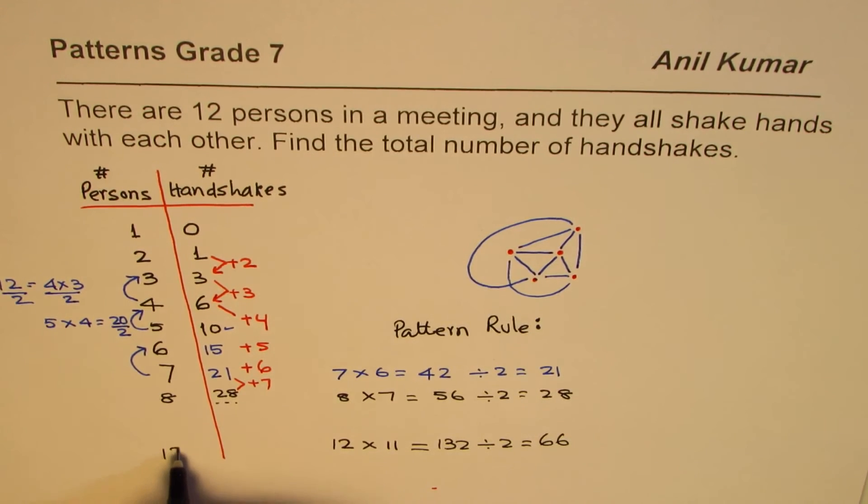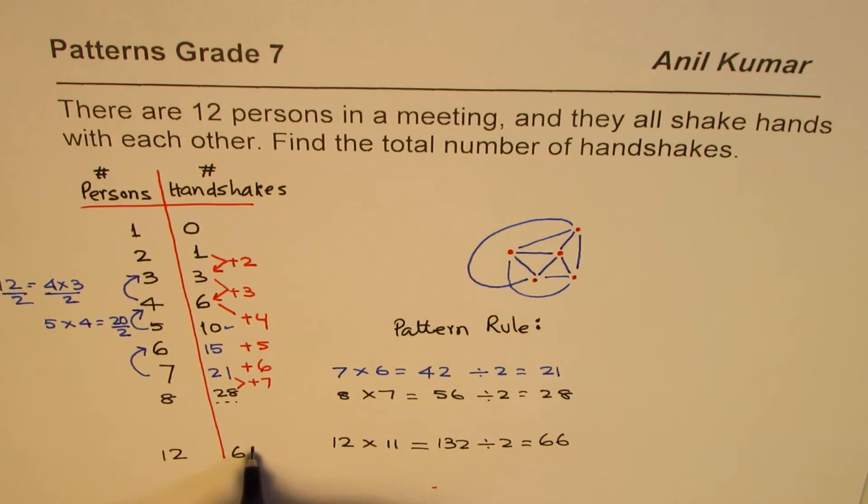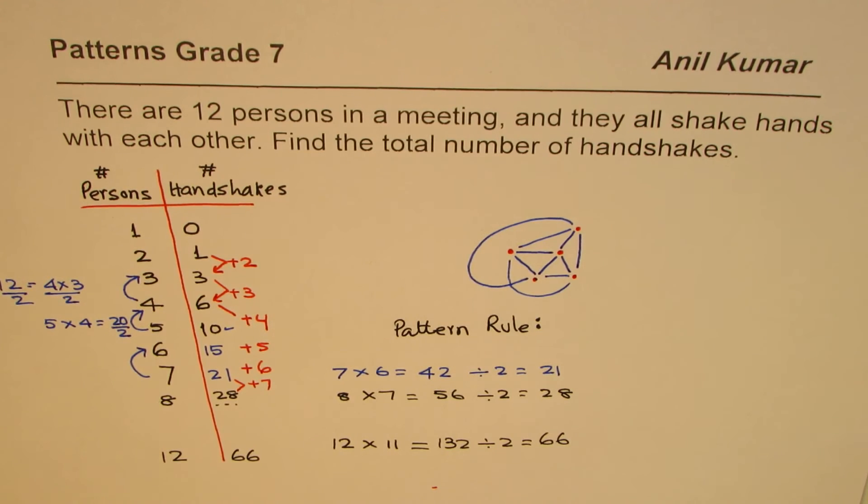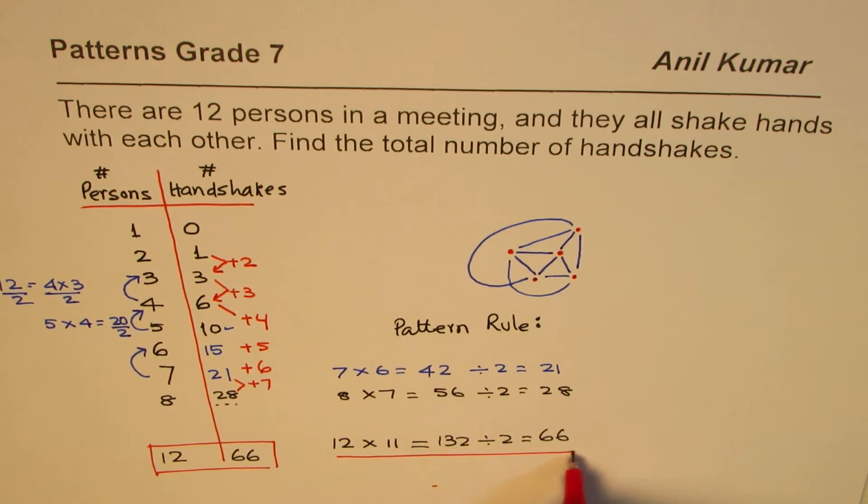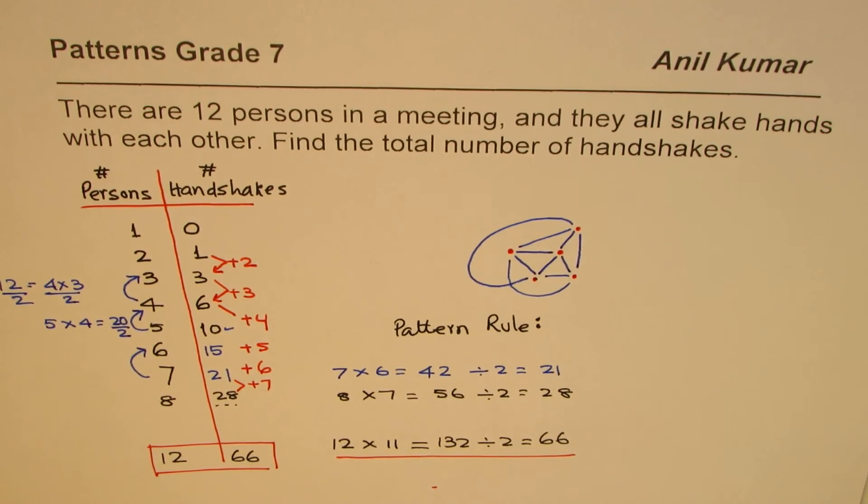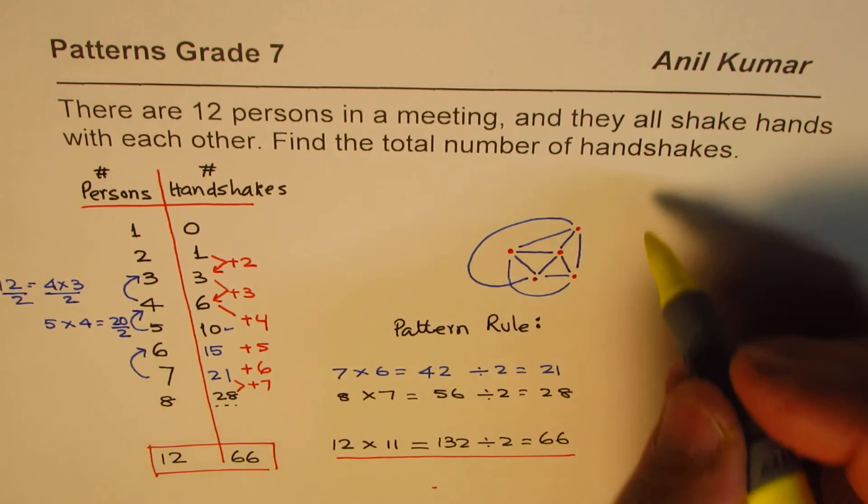So for 12 persons, we should get 66 handshakes. That is our answer. I hope you understand the method, and also this is the formula.